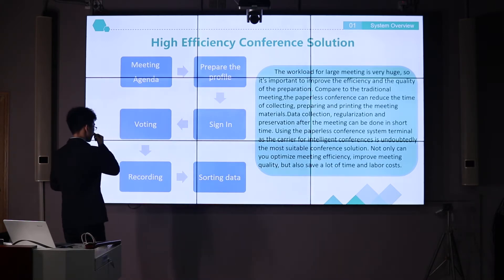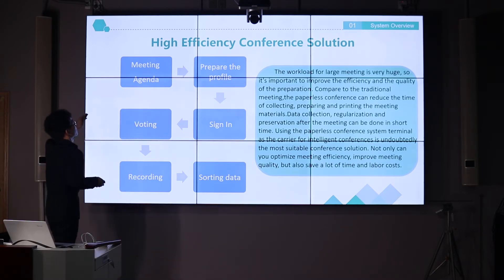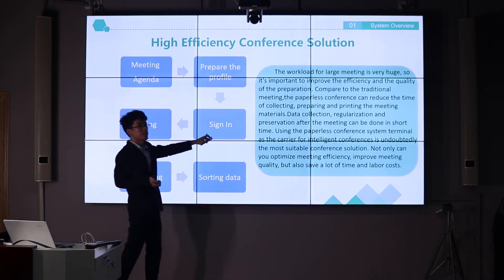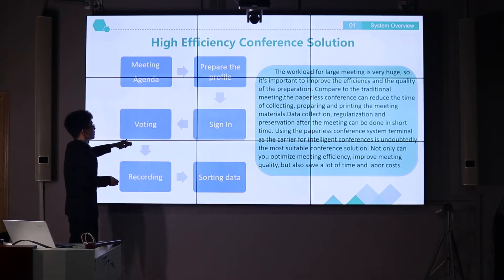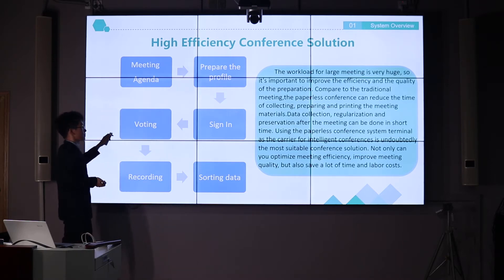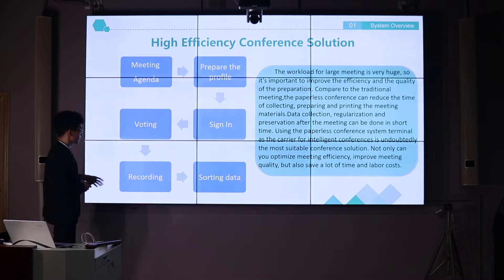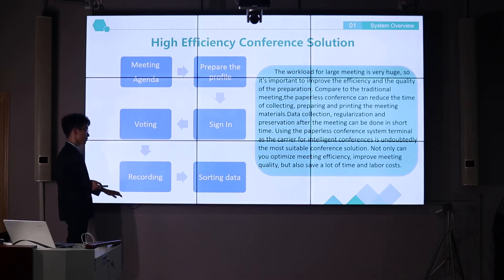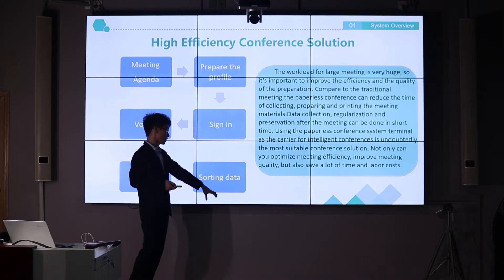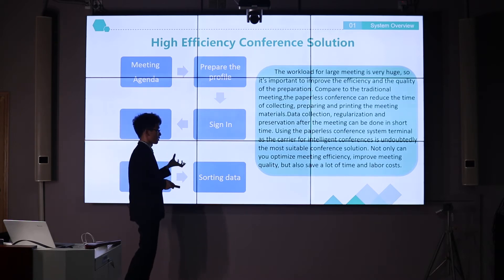This is the agenda. When you arrange your meeting, there are many parts to prepare: the meeting agenda, the profile, and the signing process. During the meeting, you need to do voting to select the chairman or make decisions. Someone needs to record the information of the whole meeting, and after the meeting you need to store all data and send it to all participants or draw a conclusion.